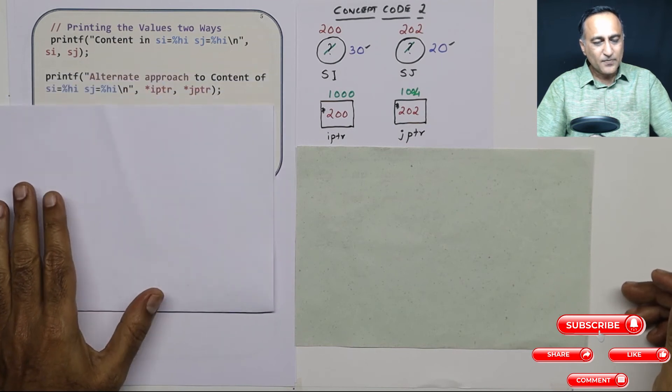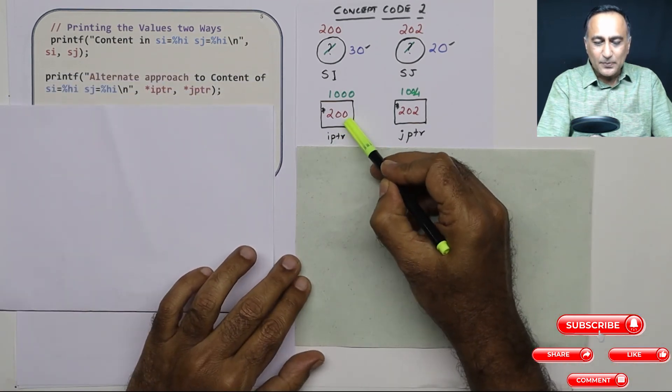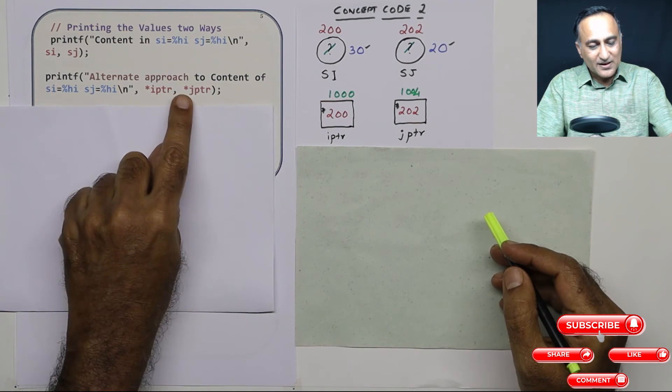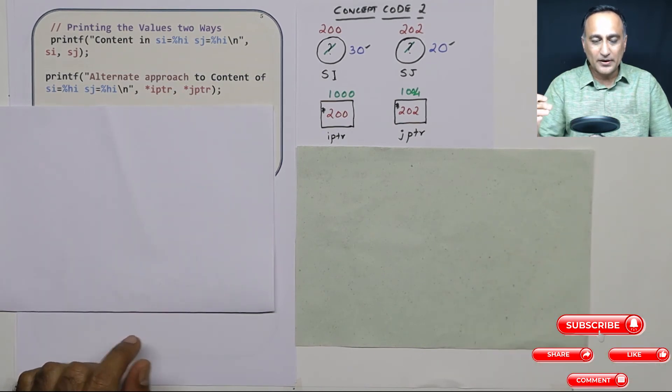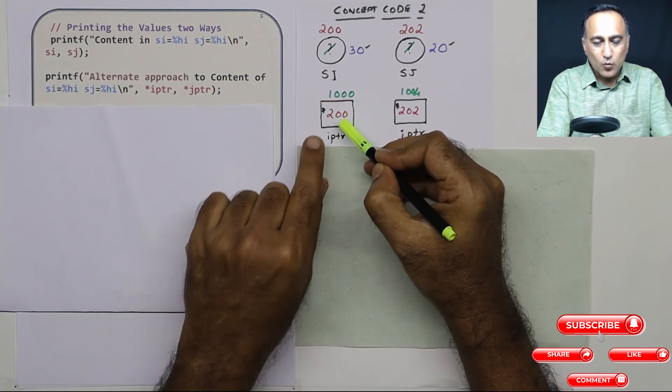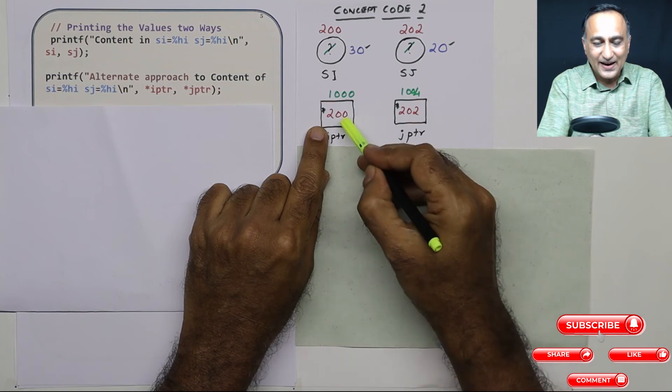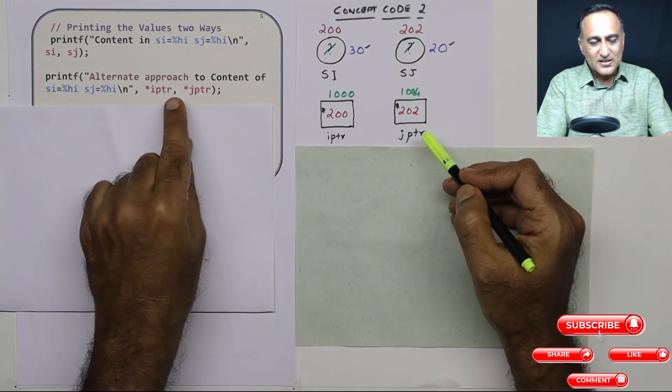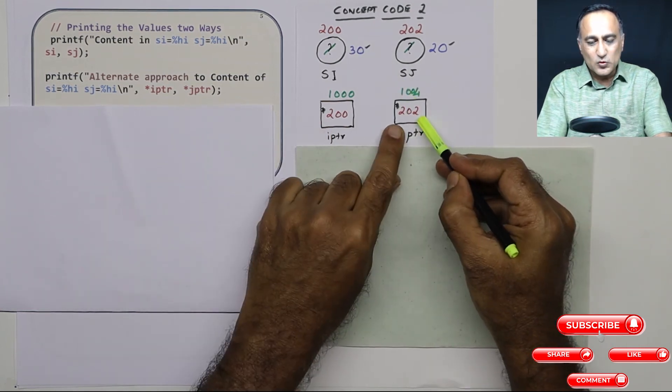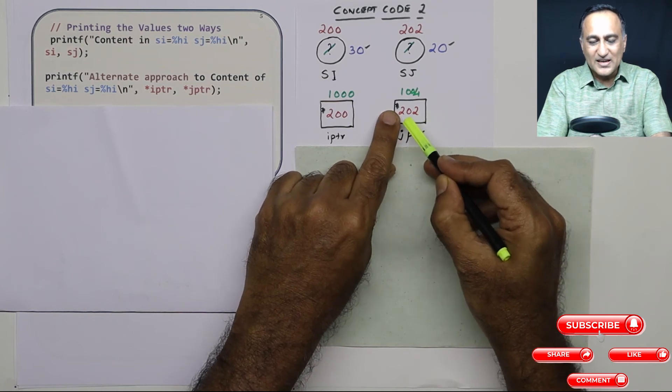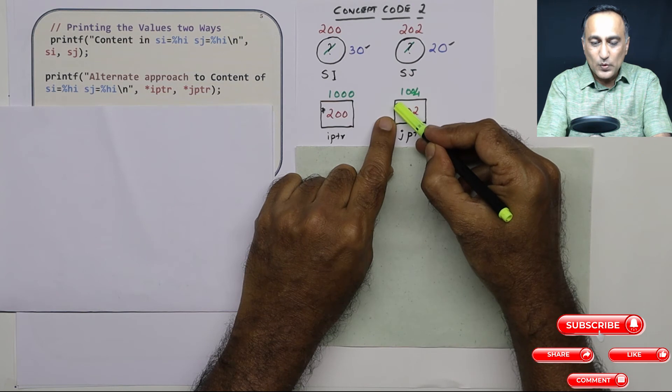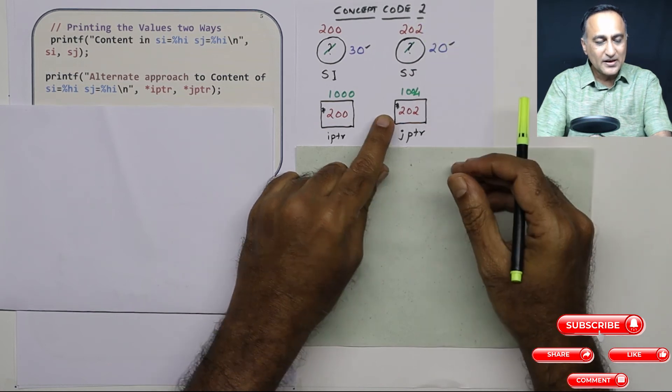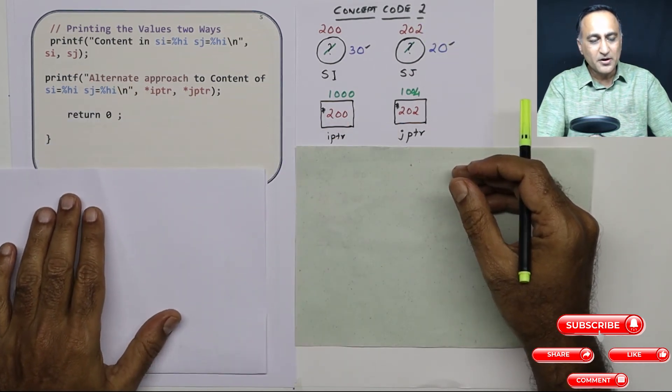Now let us come to the last one. If I just print IPTR, it will print 200. If I just print JPTR, it will print 202. But both of them are given a star or the dereference operator. So star 200 tells me what is the content at the address 200. What is the content at address 200? It is 30. Star JPTR, JPTR is 202, star 202 tells me what is the value or content at address 202. It is 20. So you're going to have 30 and 20 printed on the screen.